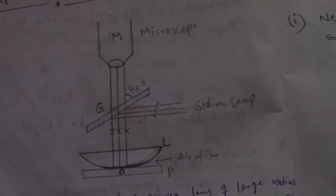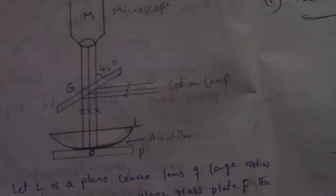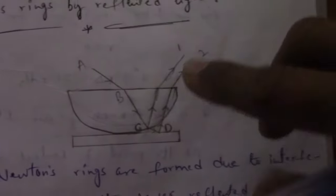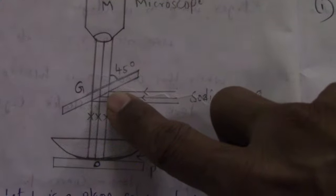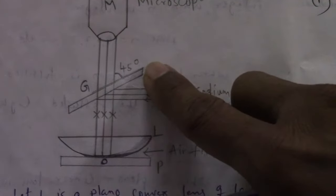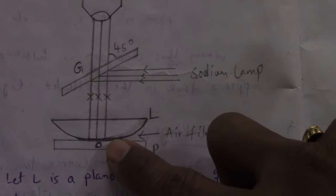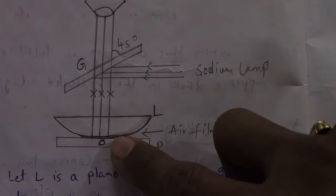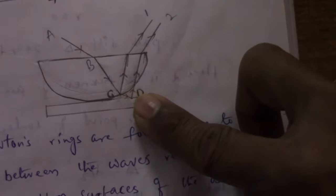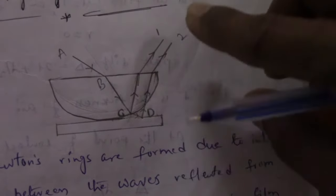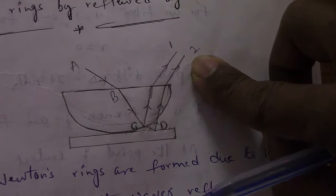Before going to the demonstration of this Newton's Rings experiment, let us have a brief theory on how the rings are formed. Light from the sodium lamp is incident on a plane glass plate inclined at 45 degrees, and that incident light is reflected and falls on the plano-convex lens. Some part is reflected back and some part is transmitted. The transmitted light is again reflected back from the plane glass plate, and these two reflected rays interfere with each other to form the concentric rings called Newton's Rings.